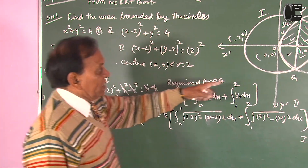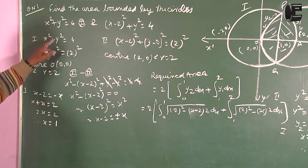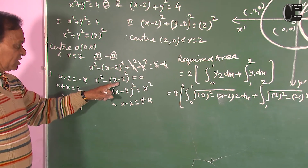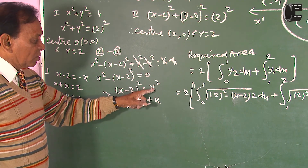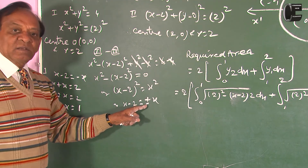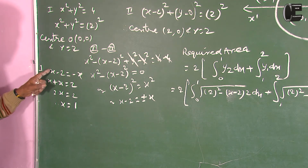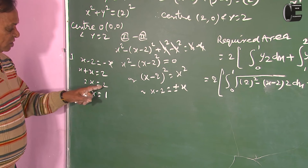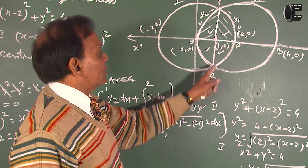Where will they intersect? First minus second: we get x squared minus (x minus 2) whole squared equal to 0, so (x minus 2) squared equal to x squared. Taking the square root, x minus 2 will be plus or minus x. Taking minus x: 2x equal to 2, therefore x equal to 1. That is the point of intersection.